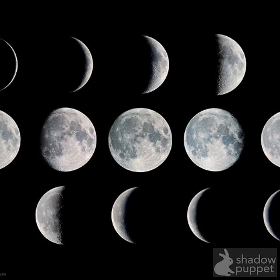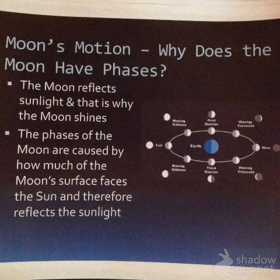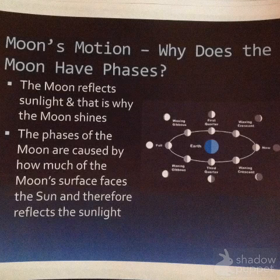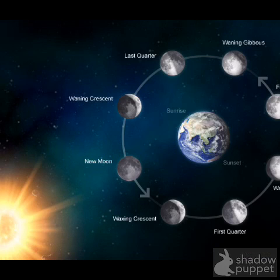The next question is: why does the Moon have phases? When you look at the sky at nighttime from day one of a month to the 31st, you'll notice that the Moon's appearance changes — those are called the Moon's phases. The Moon reflects sunlight, and that's why the Moon shines. The phases of the Moon are caused by how much of the Moon's surface faces the Sun and therefore reflects the sunlight. There is a light side of the Moon and a dark side of the Moon, and the light side is what we get to see.